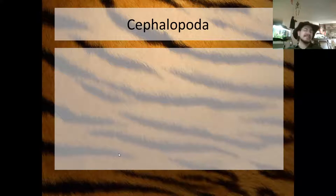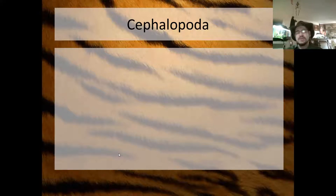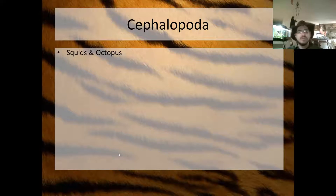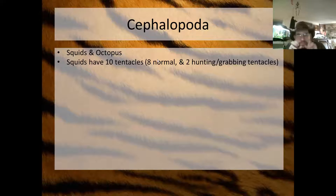Next up is Class Cephalopoda — one of my favorite kinds of animals. These are squid and octopus. Several things separate cephalopods from other molluscs. They are incredibly intelligent organisms with the ability to communicate using gestures and even colors and light patterns. Squids have ten tentacles — eight normal tentacles and two long hunting tentacles that stay coiled inside; when they spot a fish, they shoot them out to grab it.